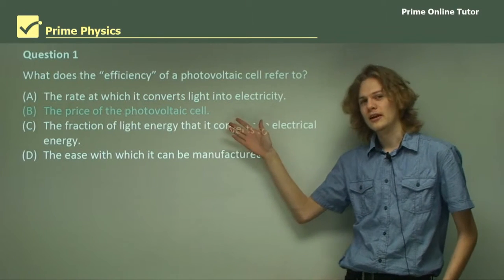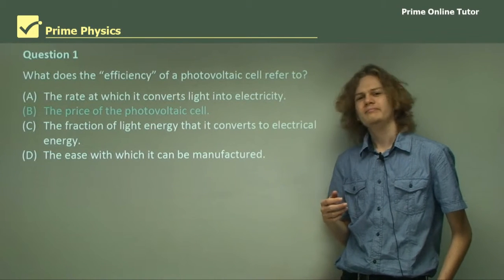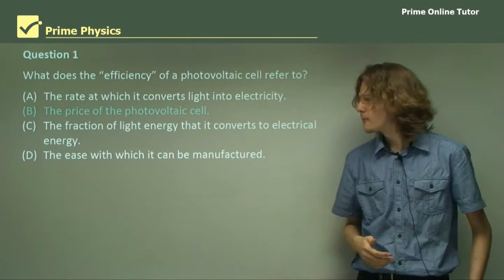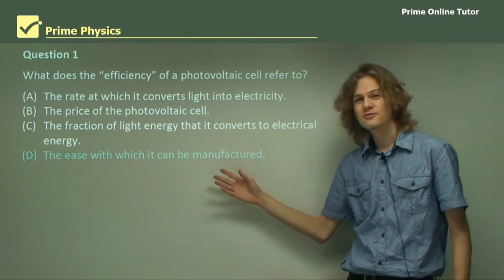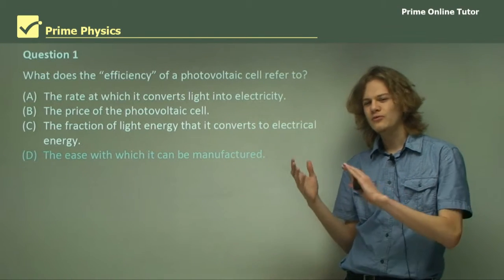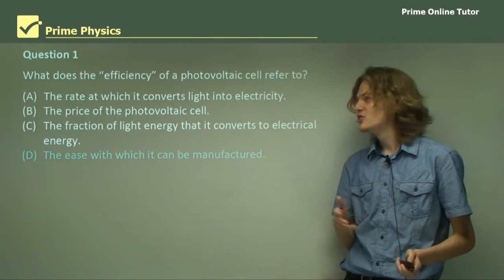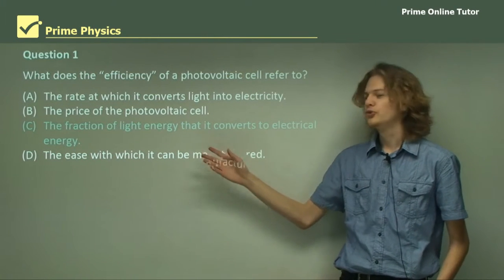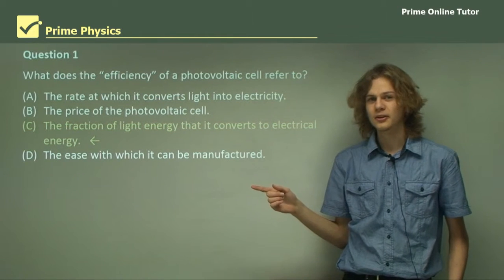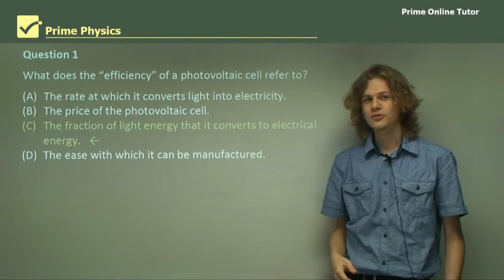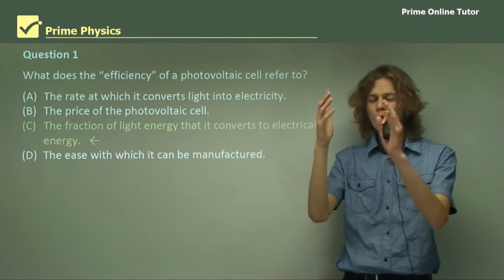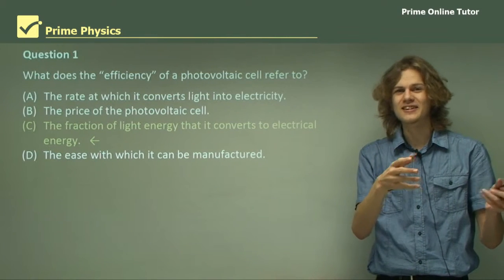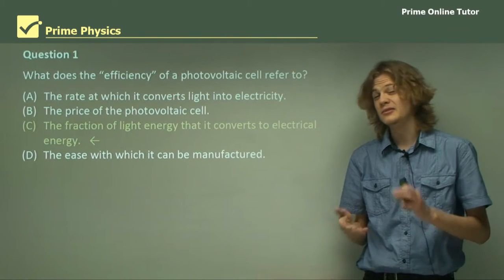Is it the price of the photovoltaic cells? Well, that's not really it either — efficiency in terms of cost is more of an economics thing, and we're dealing with physics here. The ease with which it can be manufactured? That's the efficiency of manufacturing, not of the photovoltaic cell. Our last option is the fraction of light energy that it converts into electrical energy, and this is in fact the correct answer. So if a cell is 100% efficient, it converts all light energy into electrical energy, and if it's 0% efficient, it converts none.